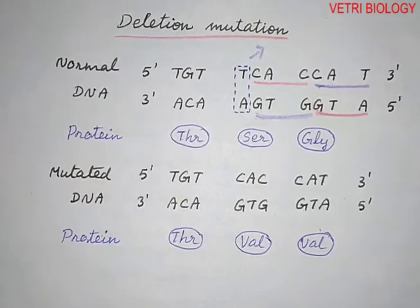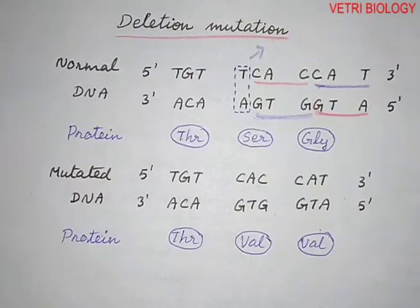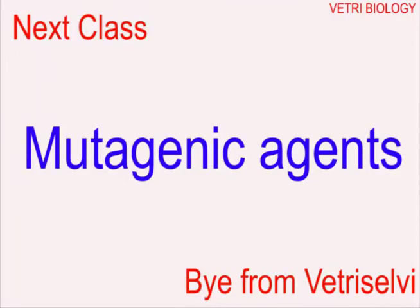So, children, so far we have seen point mutation and its types. In the next class, let us learn about mutagenic agents. Thank you, children.